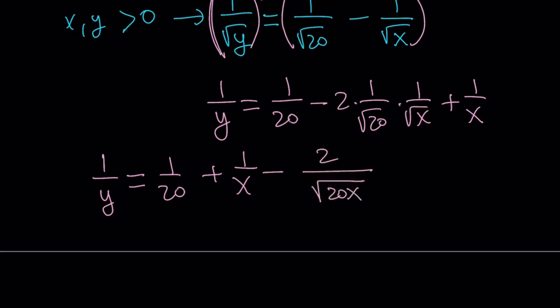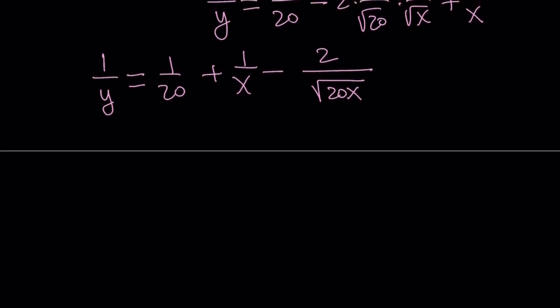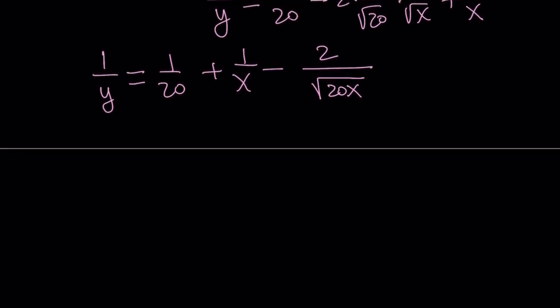Notice that everything is rational except for the radical. So that radical also needs to be a rational expression. This means the square root of 20x must be rational.